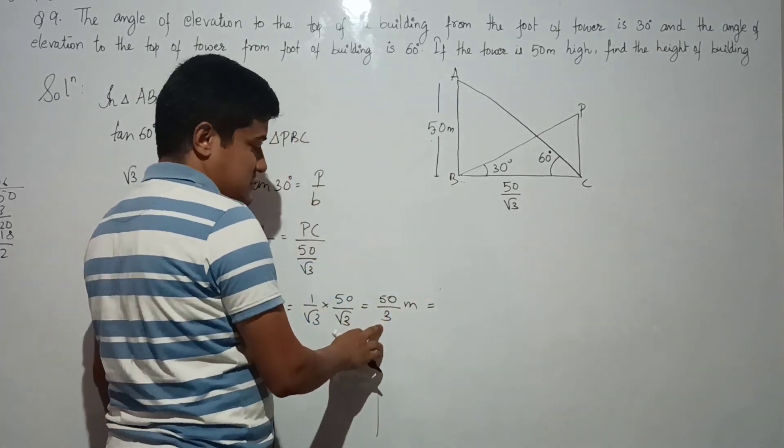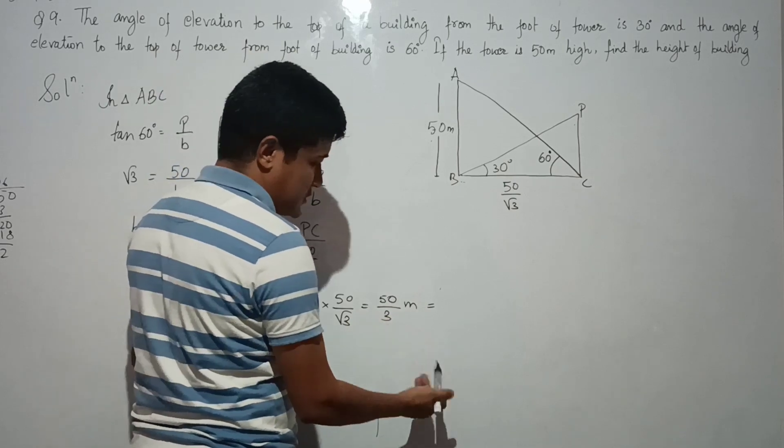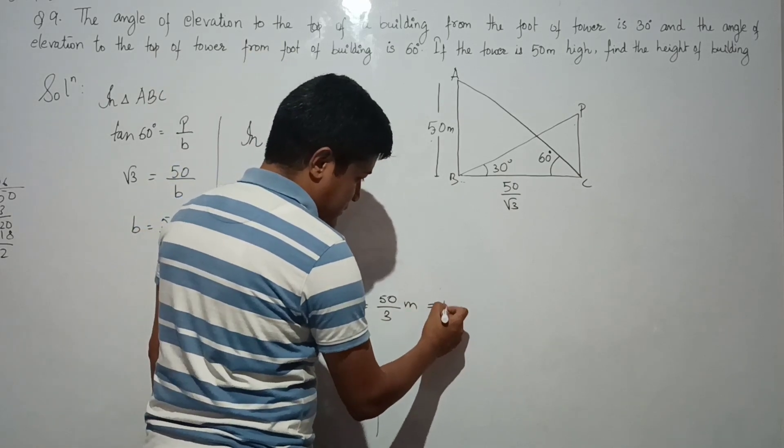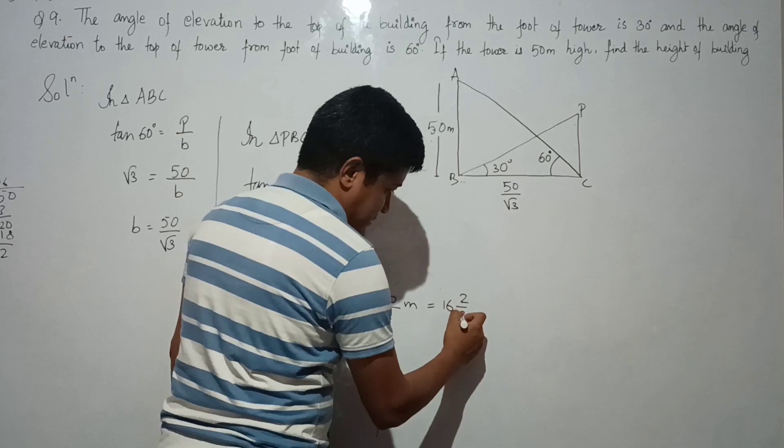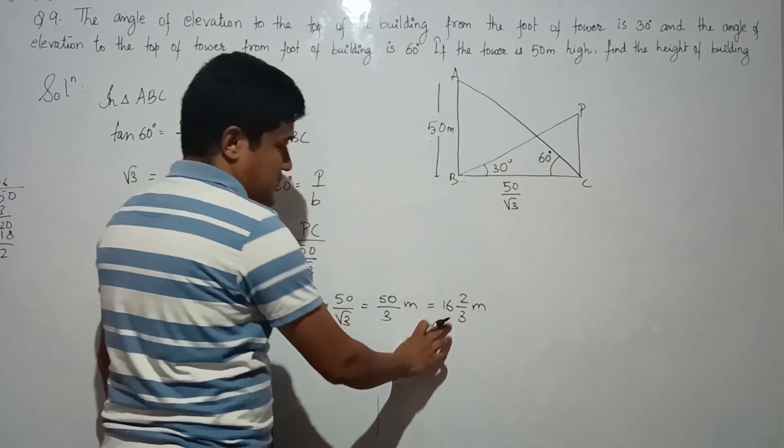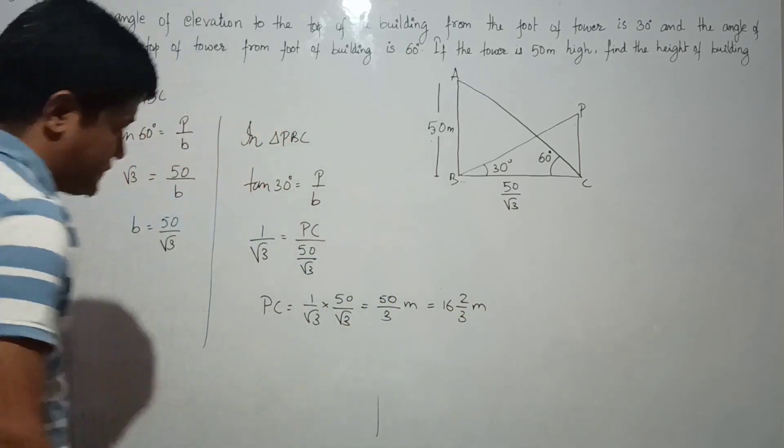50 divided by 3 is 16.67, non-terminating. So this is your final answer. Thank you.